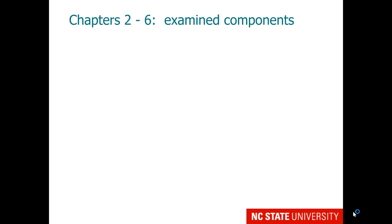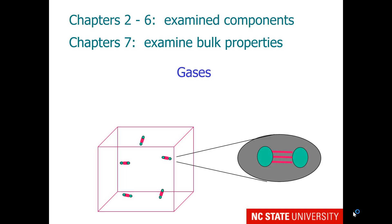As a summary from Chapters 2-6, we've been examining components by themselves—atoms, ionic compounds, and molecular compounds. Starting with Chapter 7, we'll be looking at bulk properties. Chapter 7 starts with a discussion of gases.